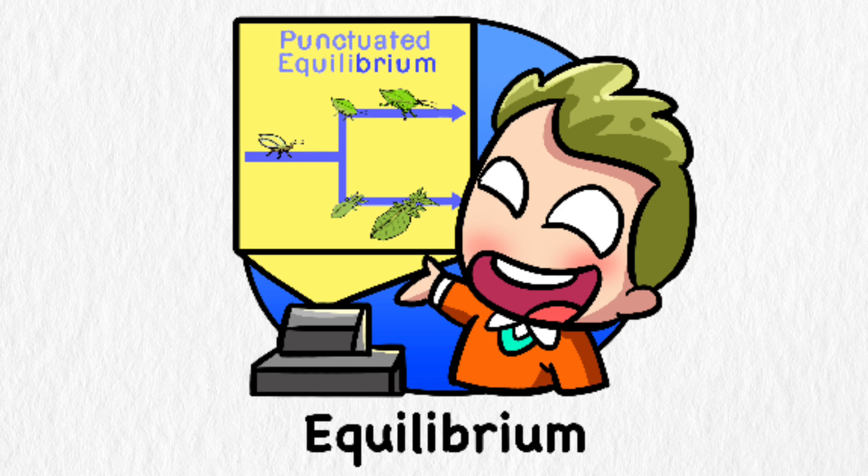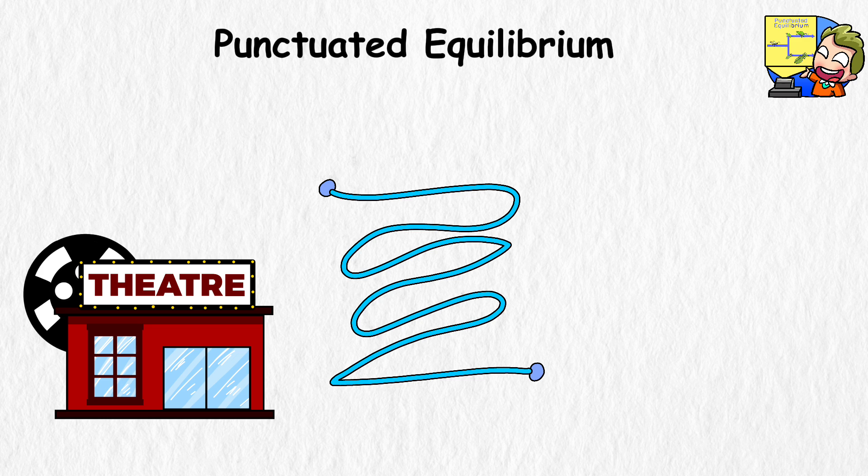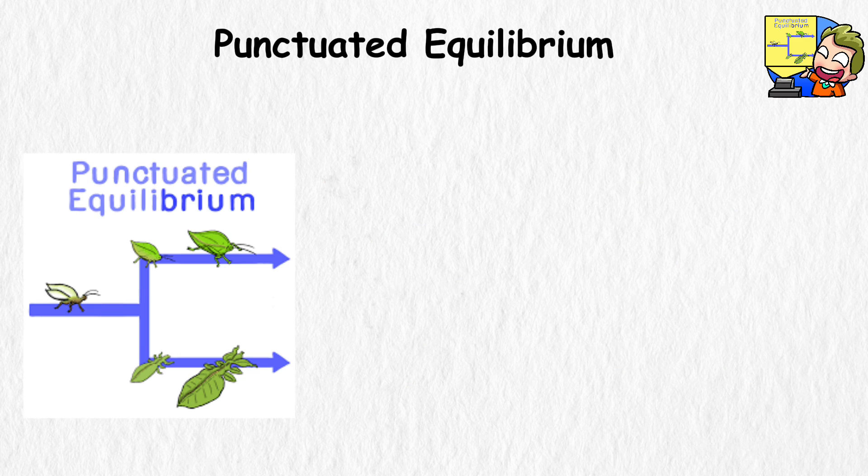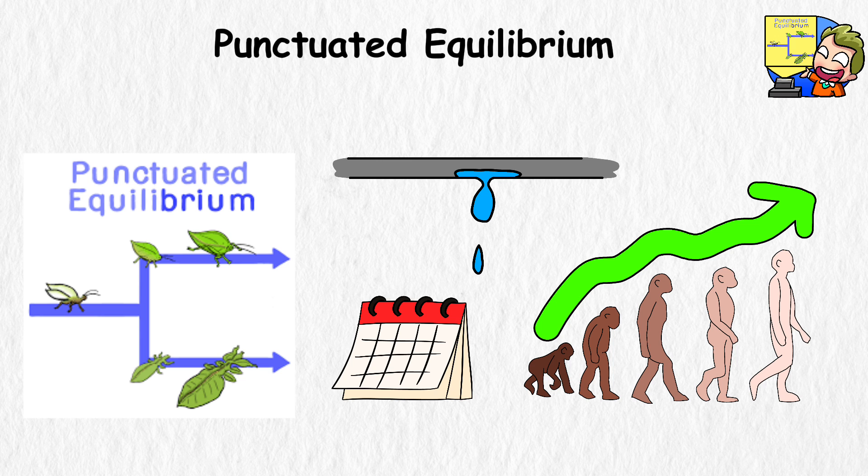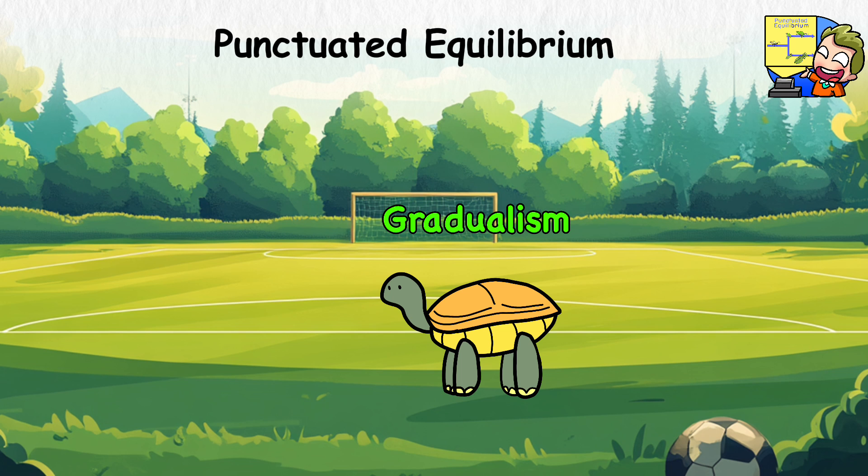Punctuated equilibrium. Let's say you're watching a movie, and instead of a smooth storyline, you get sudden plot twists that instantly change the story. That's what punctuated equilibrium is all about. Traditionally, evolution was thought to happen gradually, like a slow drip of changes over millions of years. Picture a tortoise leisurely strolling across a field, and you get the classic gradualism model.